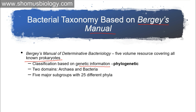Classification is based on genetic information. While we can check morphology, colony appearance, biochemical assays, and staining, the confirmed classification to report a new species or a fixed confirmed property must rely on genetic information. Phylogenetic analysis is made as a result of genetic sequencing. Prokaryotes are distributed into two domains: Archaea and Bacteria. Five major subgroups with 25 different phyla are present in Bergey's Manual.